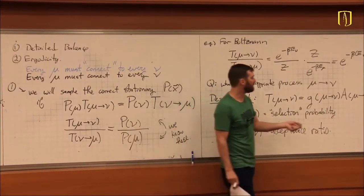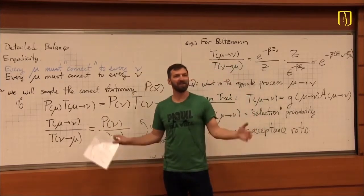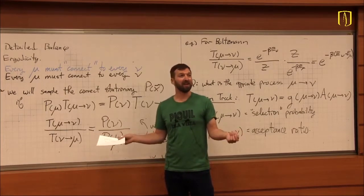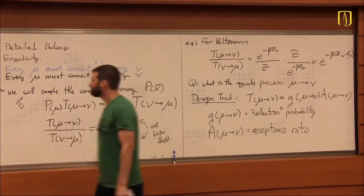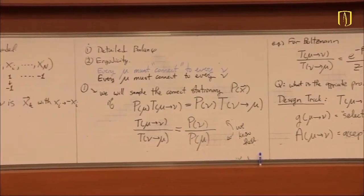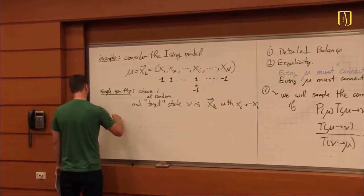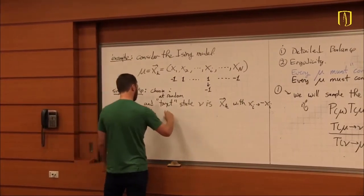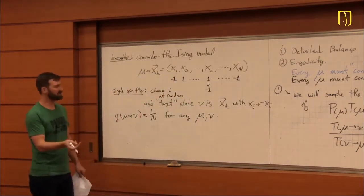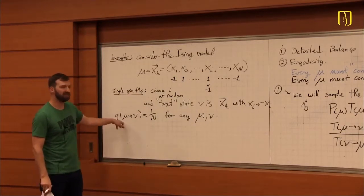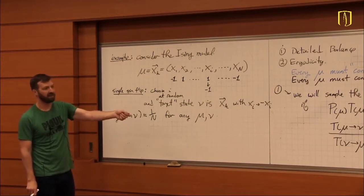You want to design algorithms that have as high an acceptance ratio as possible, but also give you highly uncorrelated samples. If you have a lot of correlation, your dataset might have to be bigger to get a good estimator. If you have a small number of highly uncorrelated samples, you can find the minimum size dataset to produce your estimator. Randomly choosing the site index gives us a very simple selection probability: 1/N for any mu, nu, or x_k. You'll do this in your tutorial — select a site at random. That gives you the selection probability. The goal is now to use detailed balance to derive an equation for the acceptance ratio.